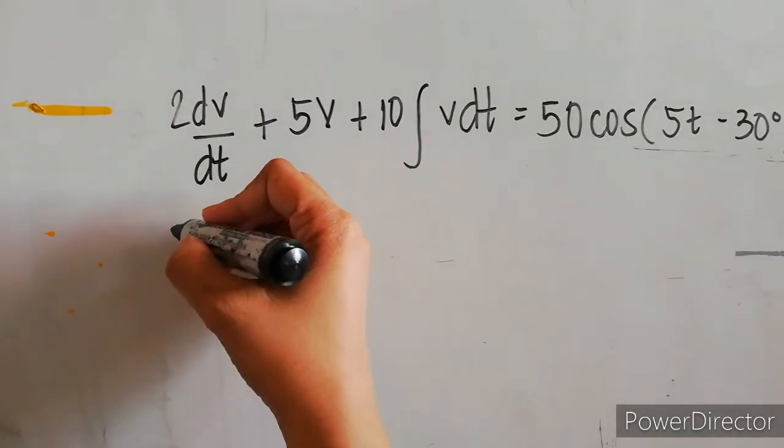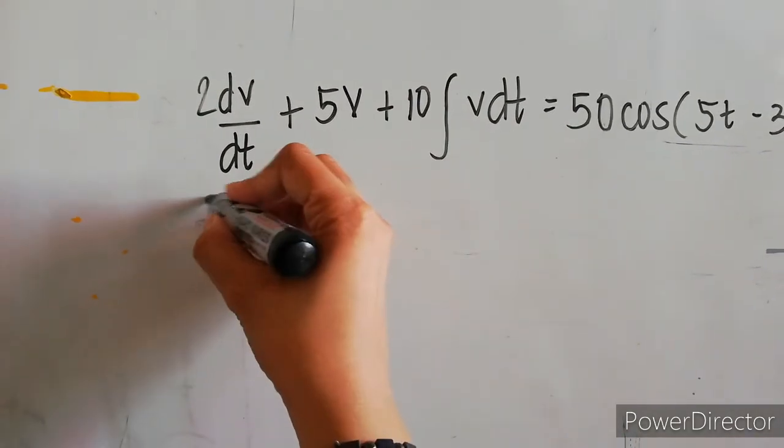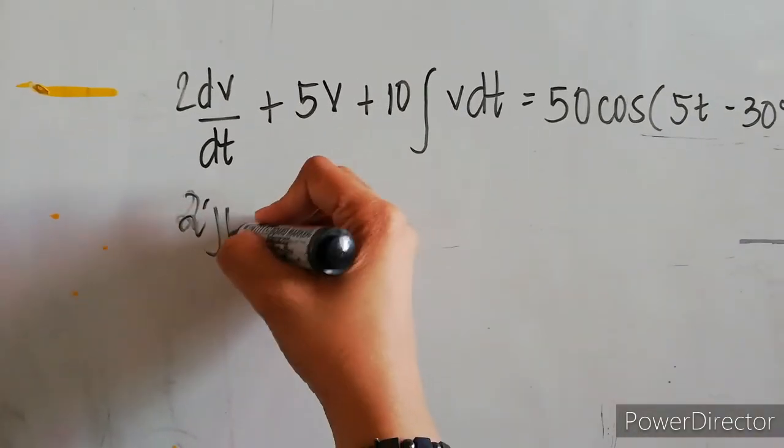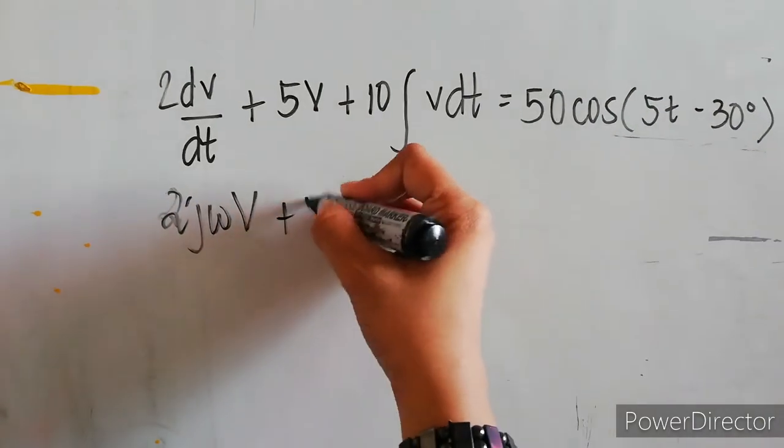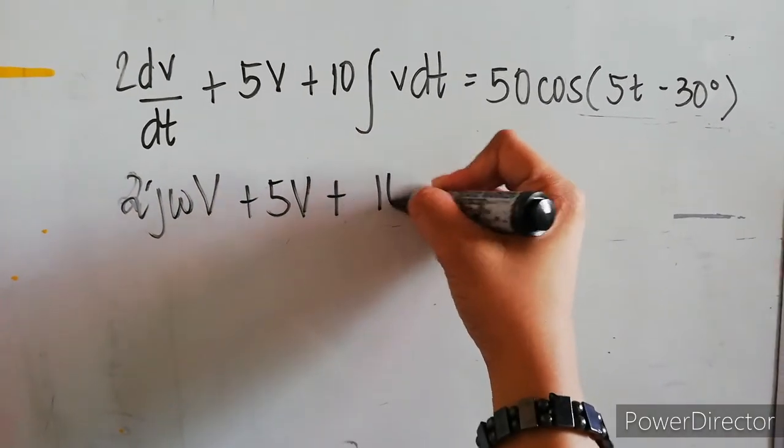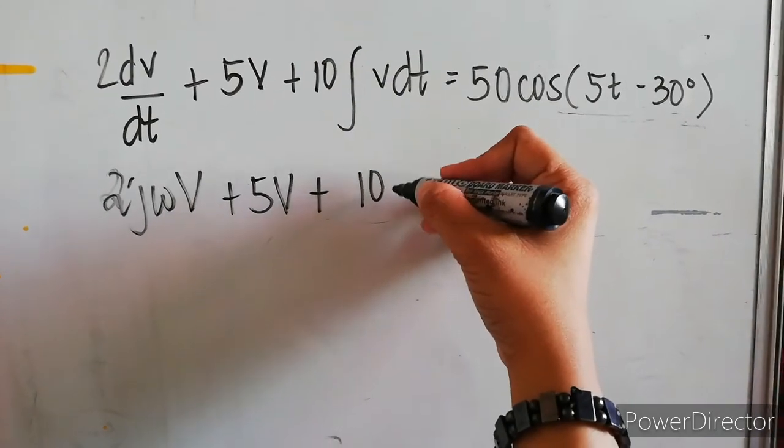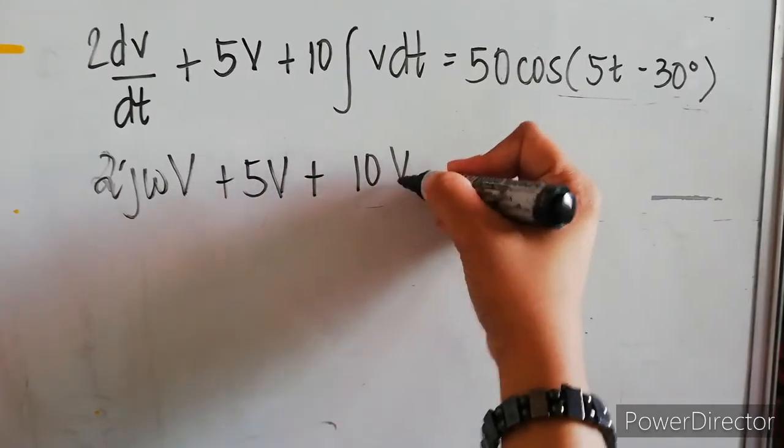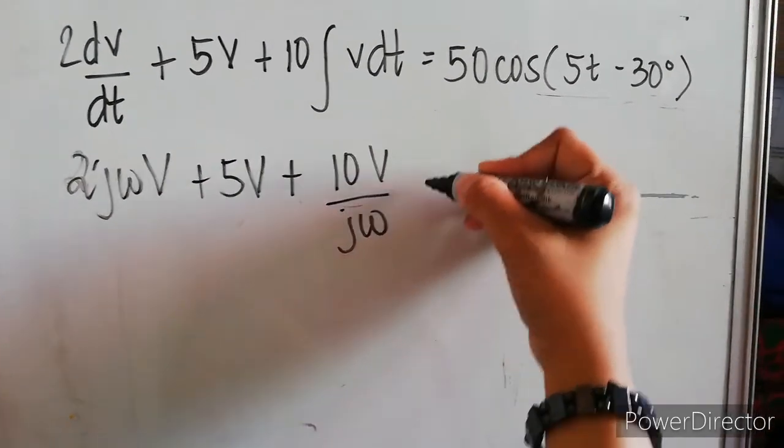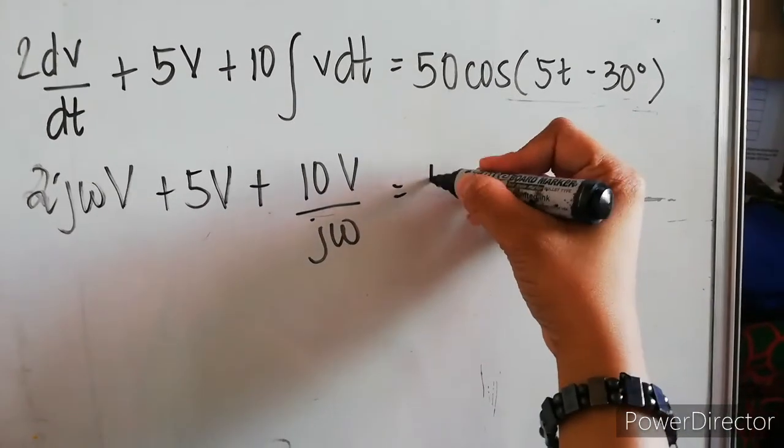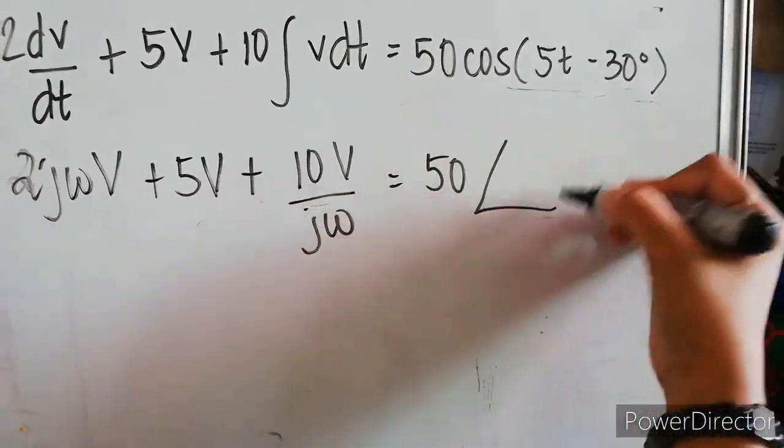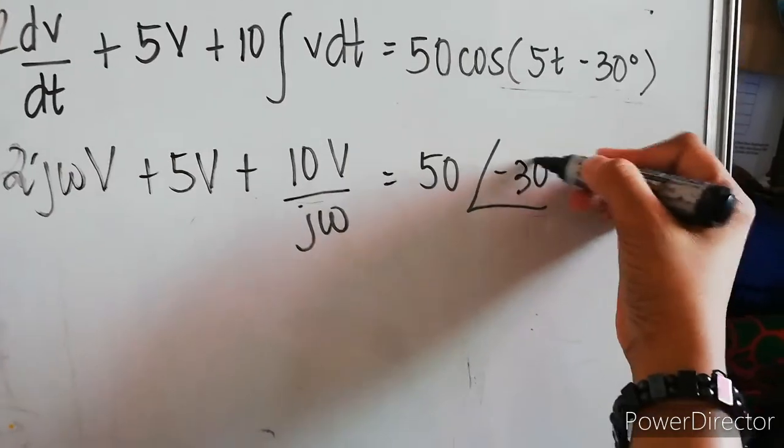Same process as what we did earlier, so we have 2jωV + 5V + 10V/(jω) = 50∠-30°.